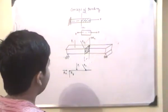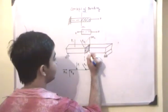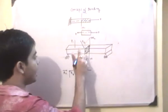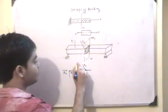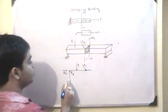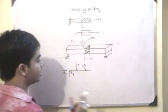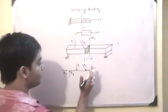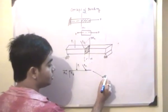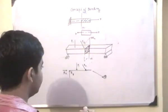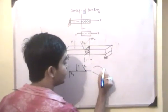Now let us cut this beam by a plane MN. This shaded portion is my cross-sectional area, and I bring the left portion of the body and draw it here. Now this will be force P1, this will be force P2, and there will be two reactions RY and RX. Due to all these forces there will be some kind of a resultant force that will develop along this plane, let that resultant force be R. There will also be a resultant moment due to RX, RY, P1, and P2 — let that moment be equal to MX.